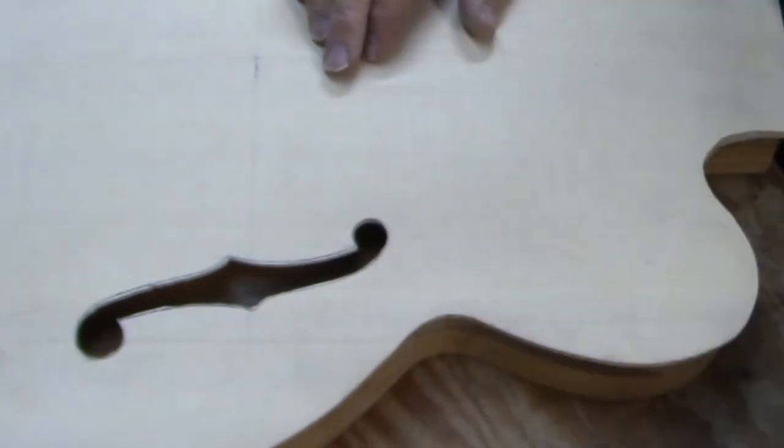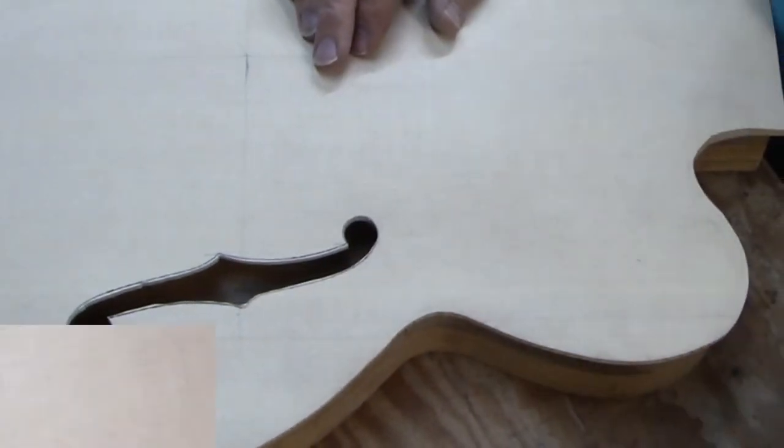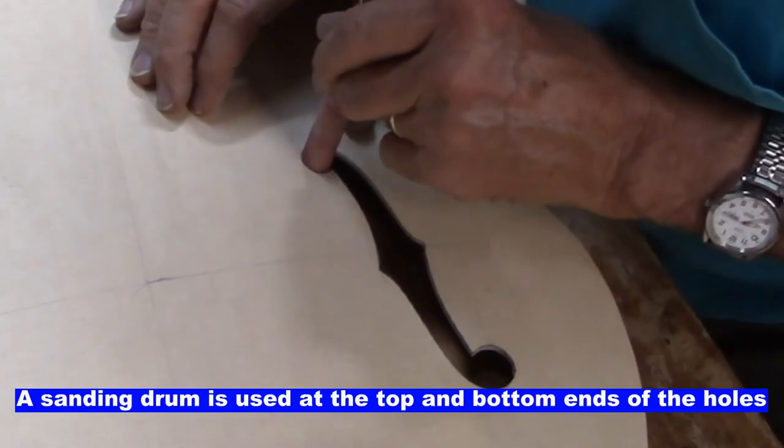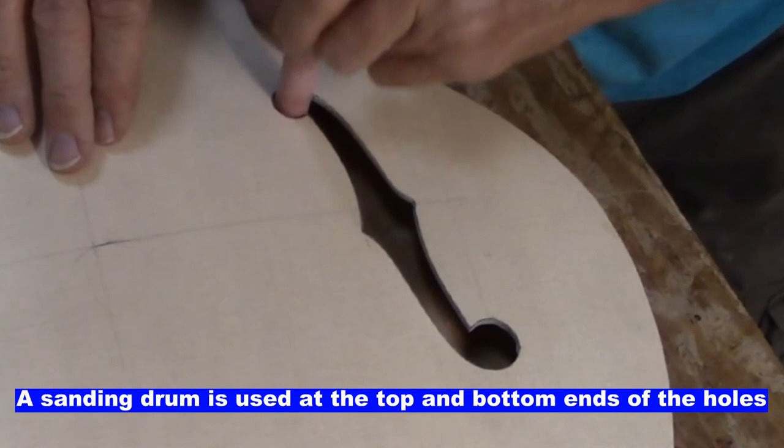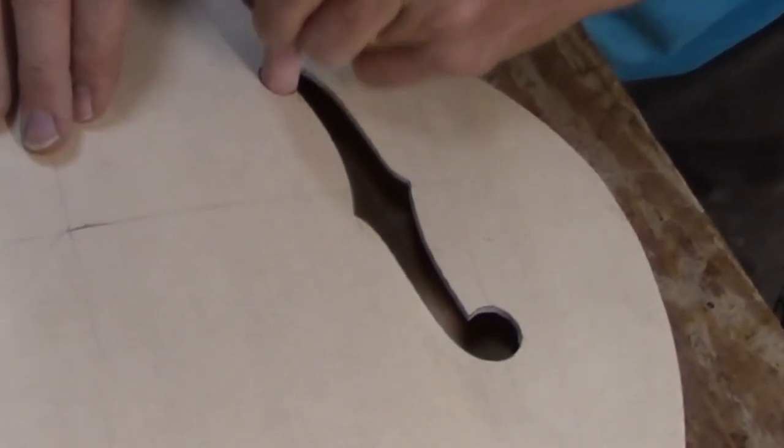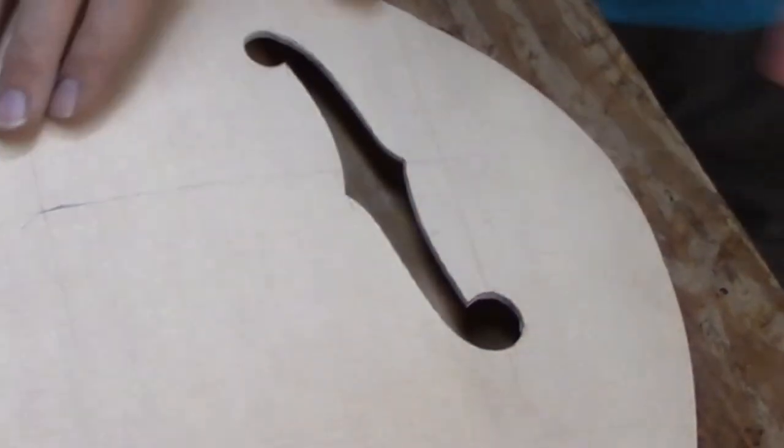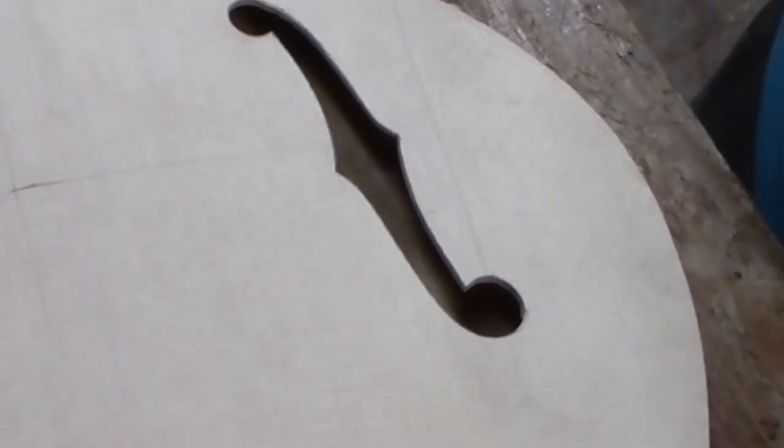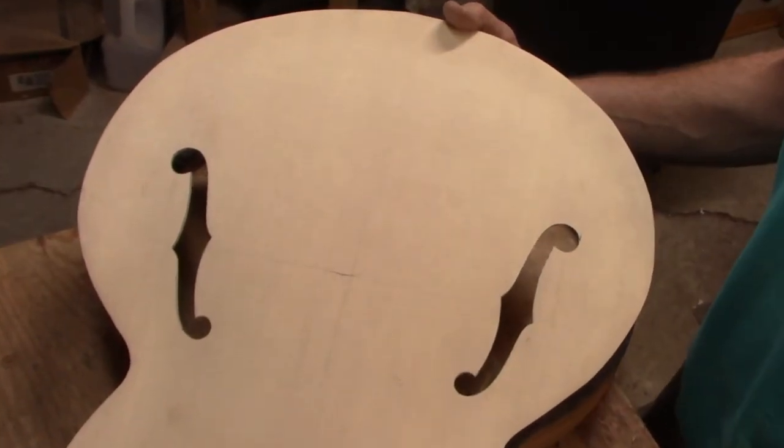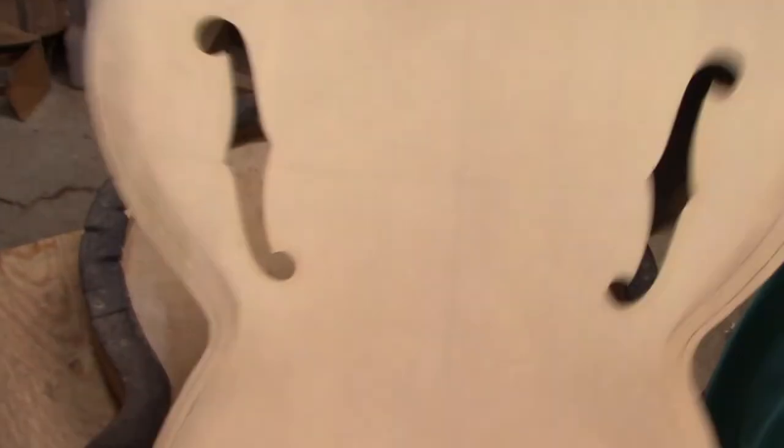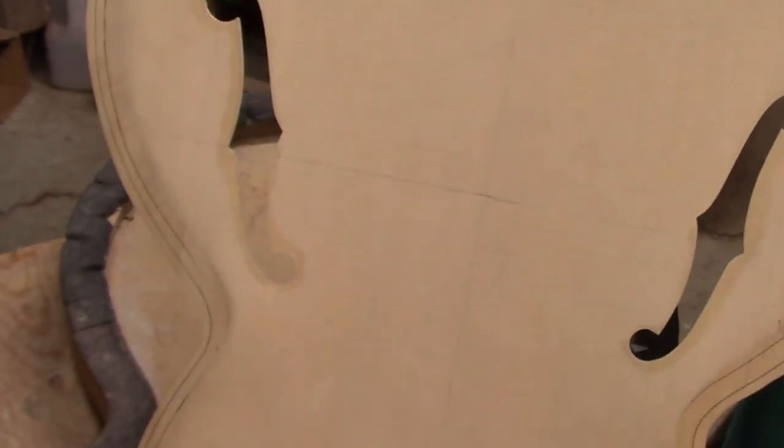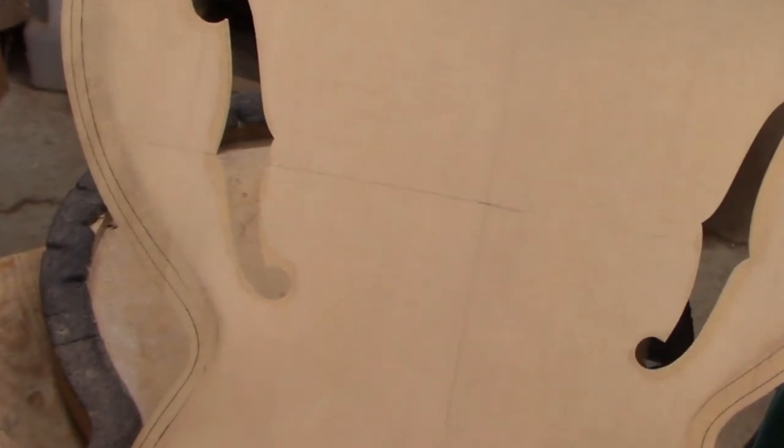And as you can see, this is going to take quite some time. So there they are looking pretty good—here's the outside and the inside. Next step is to put the binding on.